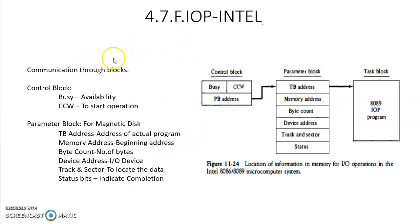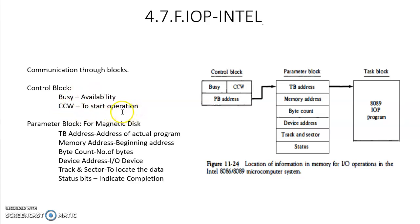The CPU communicates with the 8089 I/O processor with the help of blocks: a control block and a parameter block. The control block has two parts: a busy flag and a CCW. The busy flag indicates whether the I/O processor is available or not. The channel command word (CCW) is used to start whichever operation — out of those 50 operations — the CPU wants to perform. The control block also holds the address of the parameter block. The parameter block contains details required to perform the task in the task block, where the task is performed by the I/O processor.